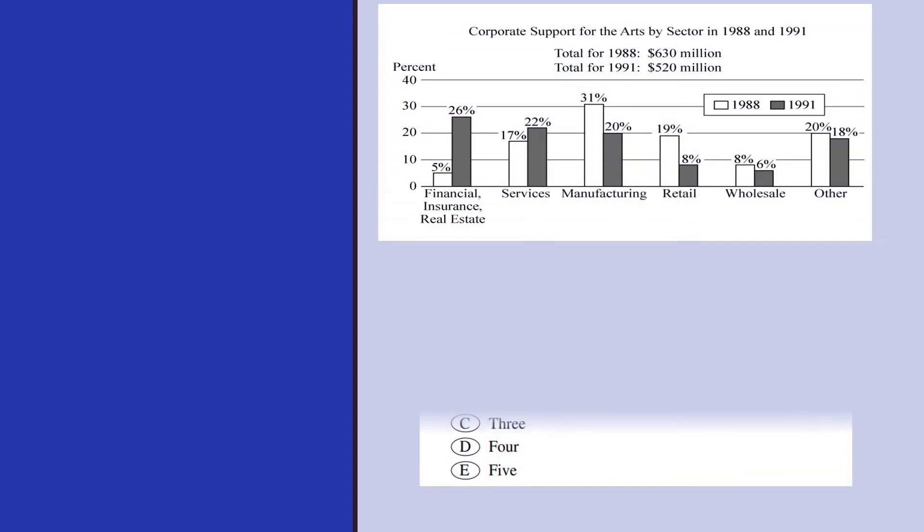We have the same diagram here. And for this question, how many of the six corporate sectors listed each contributed more than 60 million to the arts in both 1988 and 1991?